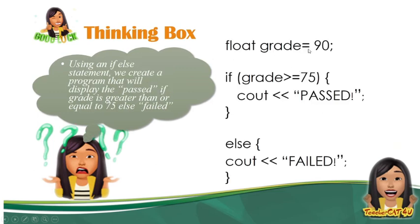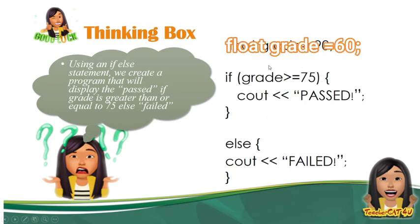Float grade is equal to 90. For example, if grade is greater than or equal to 75 — the value of your grade is 90 — is 90 greater than or equal to 75? Yes, 90 is greater than 75, so therefore it will display 'passed.' For example, if the value of grade is 60 — is 60 greater than or equal to 75? 60 is not greater than 75, so therefore it skips the true block of statement and moves to else. Else: it displays 'failed.'